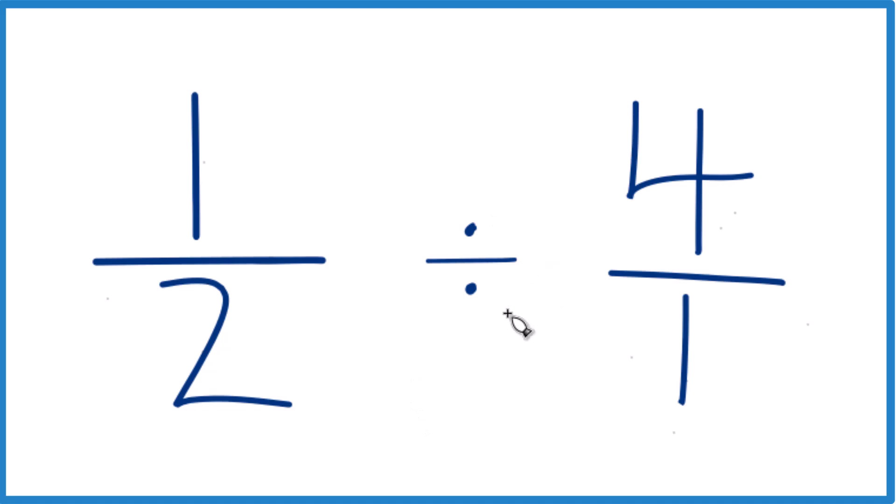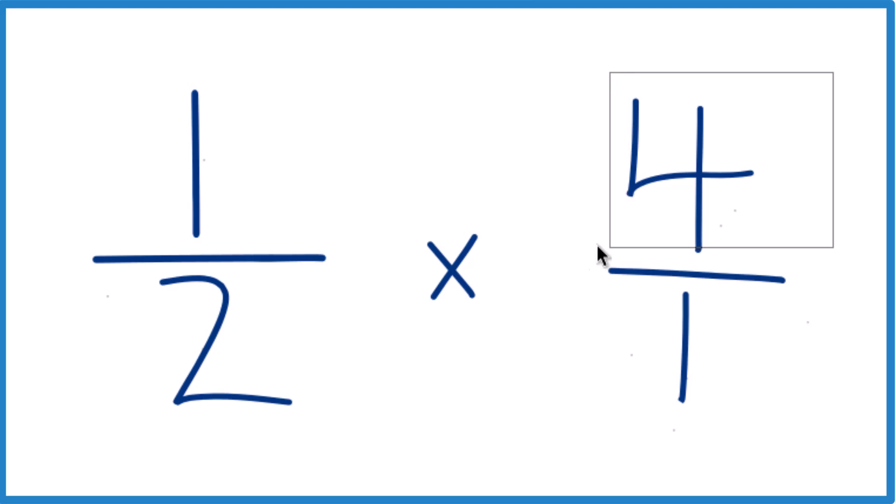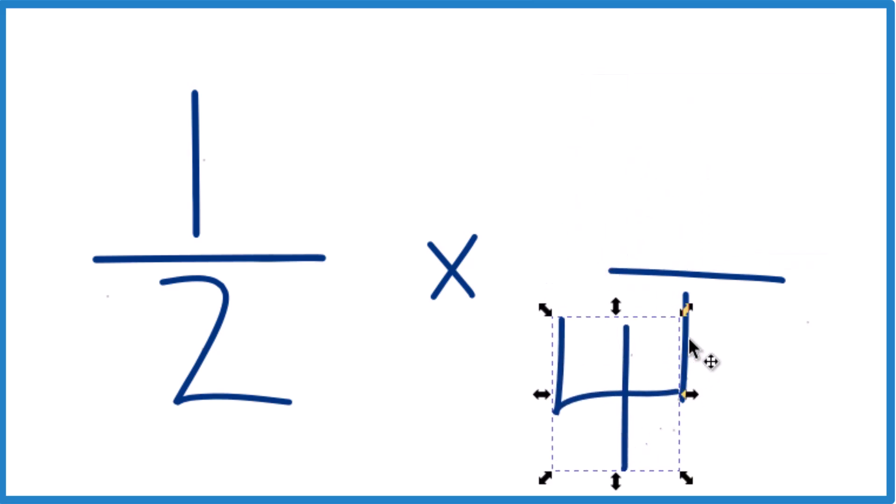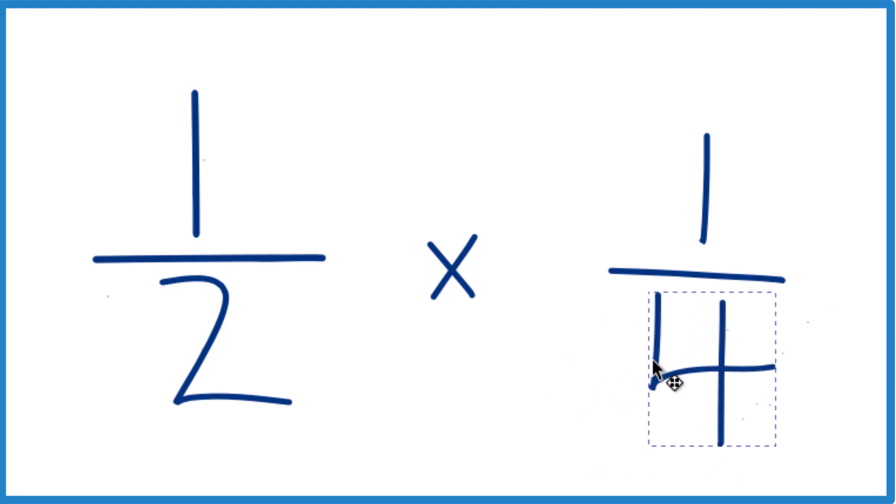Next, what we're going to do is we're going to get rid of the division here and call it multiplication. So 1 half times, but we're going to multiply by the reciprocal. So when we take the reciprocal, we take the numerator, move it down here, and the denominator goes up top. So we end up with 1 half times 1 fourth, and that equals 1 half divided by 4.